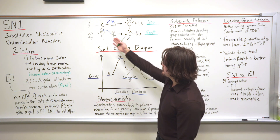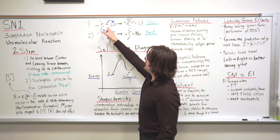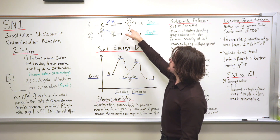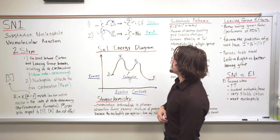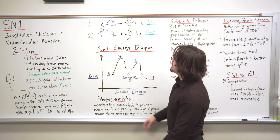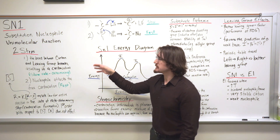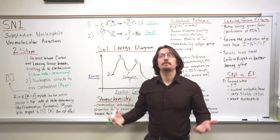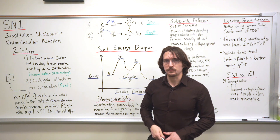The first step involves the leaving group and the bond between it and the carbon breaking, and that creates a carbocation intermediate, which leaves a positive charge on the carbon, and the leaving group, which is typically negatively charged after it leaves. This step is slow — it's the slowest of the two steps, making it rate determining. It dictates the rate of the overall reaction, and therefore this is the one that actually appears in the rate law for the reaction.